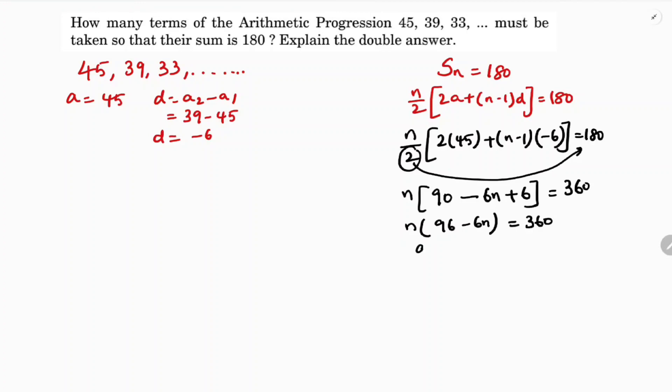So if we'll multiply, 96n minus 6n square equals 360. We'll write in the standard form. First write n square term, so 6n square I'm taking towards right side, minus 96n, and it is plus 360. So here, 6 if I'll take common, n square minus 16n plus 60 equals 0.